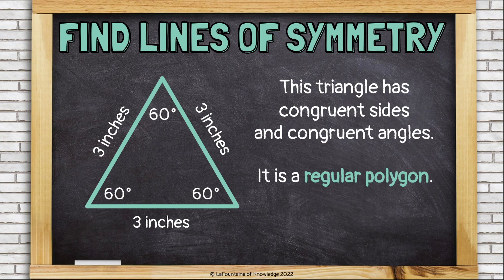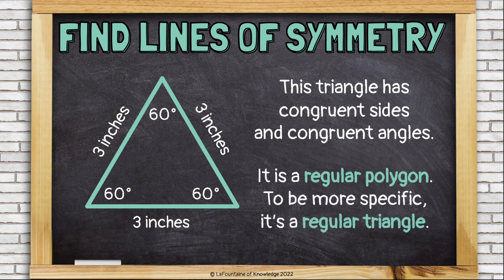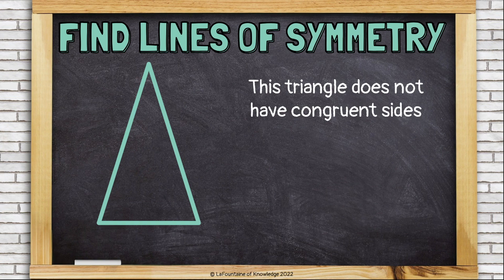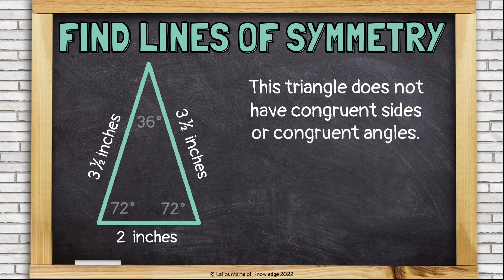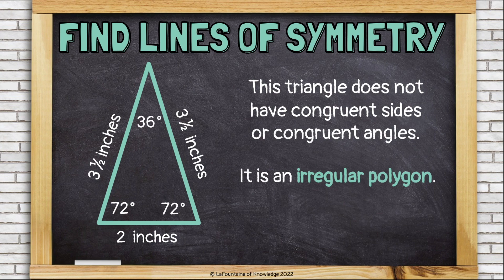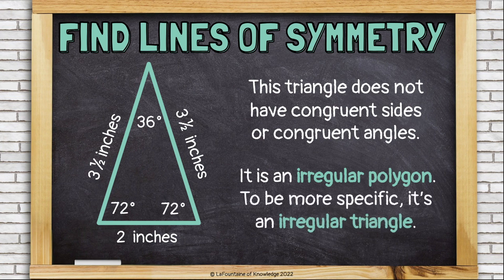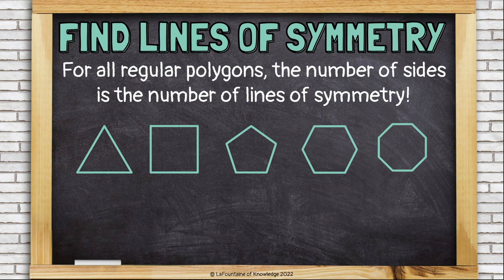So this is a regular polygon — more specifically, it's a regular triangle. This other triangle does not have congruent sides: the bottom is two inches and the sides are three and a half inches. They're not all the same length, and it doesn't have congruent angles either. It is an irregular polygon, or an irregular triangle.